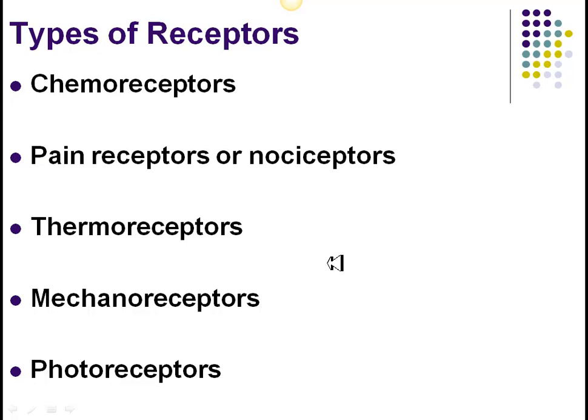The types of receptors that exist are general chemo, noci, thermo, mechano, and photo. Chemoreceptors are sensitive to chemical changes — a chemical binds to them and alters them in some way, and that's what starts off the action potential that will travel down the nerve. Smell is a chemoreceptor — it's a chemical that binds to olfactory receptors in your nose. Taste is also a chemoreceptor.